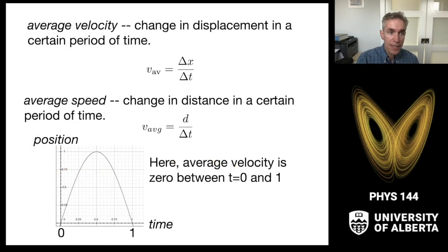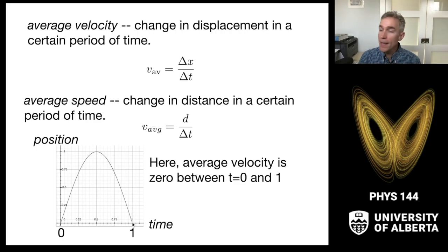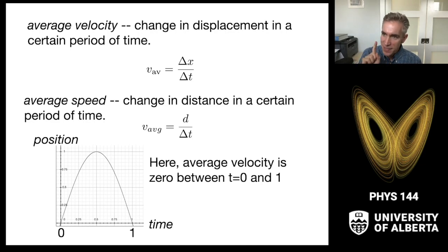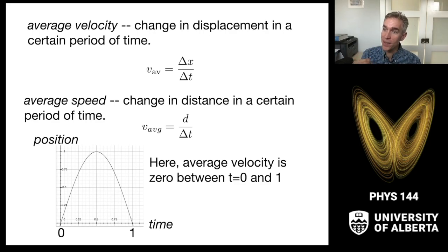The average velocity is the change in displacement over a period of time. The average speed is that always-increasing distance divided by the same period of time. For a particle that goes from t=0 to t=1, rises to some position, and then comes back, the average velocity is zero — displacement is zero, time interval is one. The speed is harder to calculate because we need the full arc length of the curve, which requires calculus.